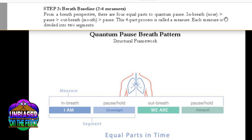The step two is breath baseline, two to four measures. As you see in the picture here, a measure is a complete cycle, basically. And the cycle consists of four equal segments. You're going to breathe in, you're going to pause, you're going to breathe out, you're going to pause.